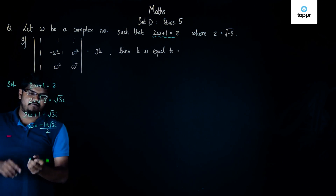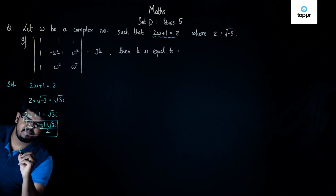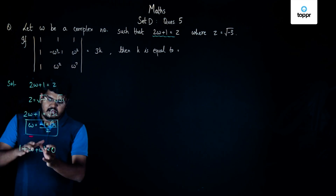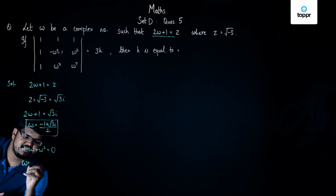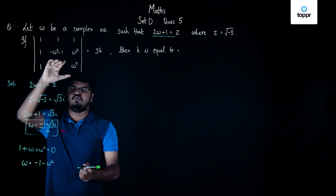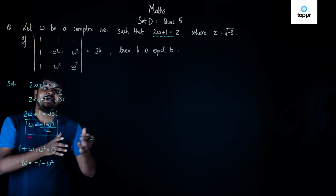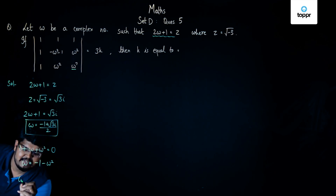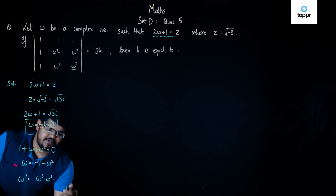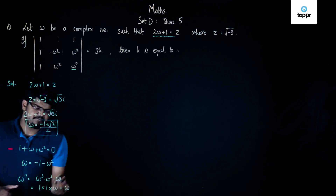We now have the value of omega equal to minus 1 minus root 3 iota by 2, and we also know that 1 plus omega plus omega squared is equal to 0. Substituting the value of omega, we can say that omega is also equal to minus 1 minus omega squared. We already know that omega is the cube root of unity, so omega to the power 7 can be written as omega cubed — which becomes unity — times omega cubed again — unity — times omega, giving 1 times 1 times omega, which is simply omega.